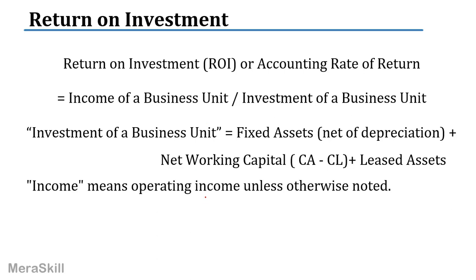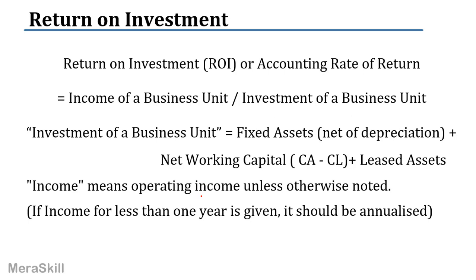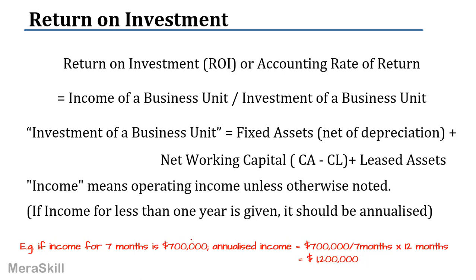Income is operating income, but remember we take an annualized figure. If income is for less than one year, then we take a one-year figure. For example, if income for seven months is 700,000, we can't divide 700,000 by the investment directly. We annualize it: 700,000 for seven months means 100,000 per month, so for twelve months it would be 1.2 million dollars. That is what we would take as the operating income when computing the return on investment.